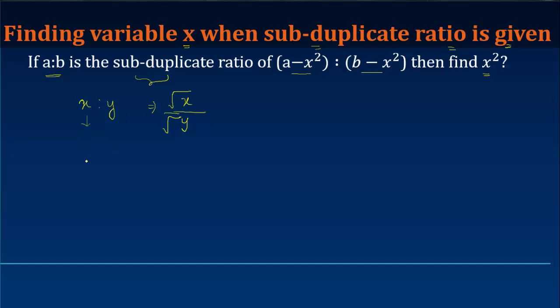In this case, instead of x and y, we have (a minus x²) divided by (b minus x²), and then we take the square root of these two numbers to get the subduplicate ratio of the given numbers. But what you are told is that the subduplicate ratio is actually equal to a upon b.